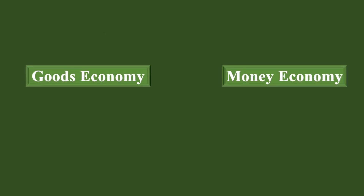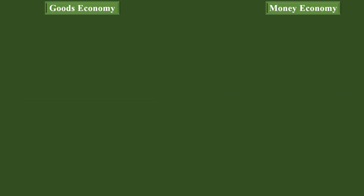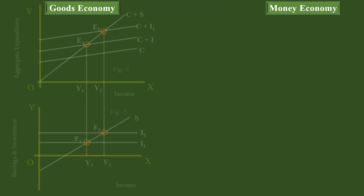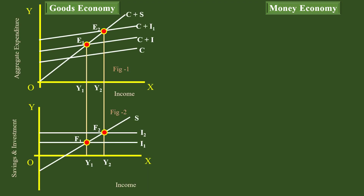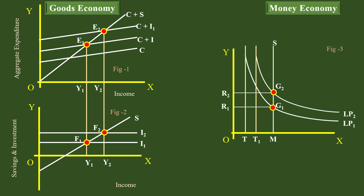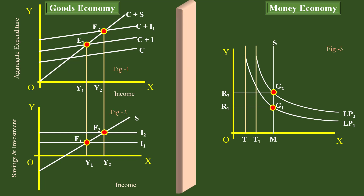The theory of income and output analyzes the goods economy and explains equilibrium income determination. Similarly, the theory of money and interest examines money economy and proceeds to explain equilibrium interest determination. These two theories treat these two markets separately, as one independent of the other.